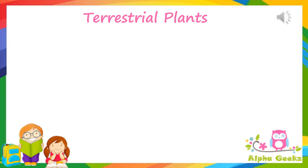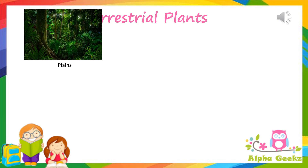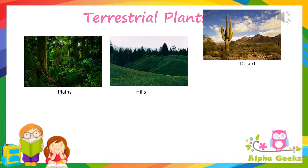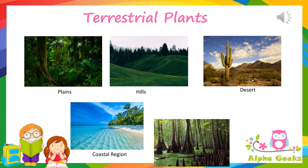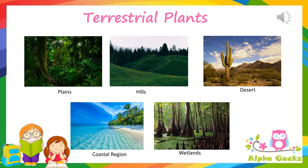Let's see more about terrestrial plants. As there are different landforms on this earth like plains, hills, desert, coastal region and wetlands, likewise, there are different types of plants growing in each of these habitats. How these plants have adapted themselves to these regions is what we will be learning in the next coming videos.